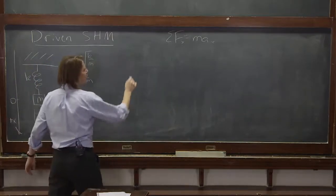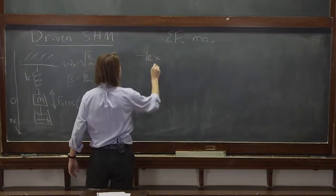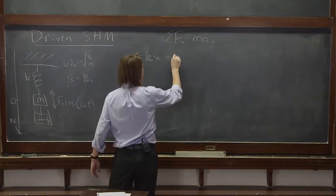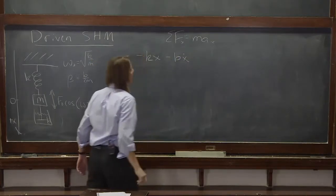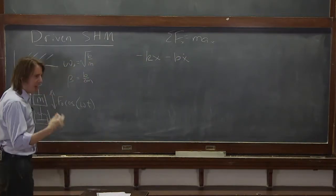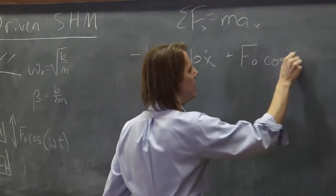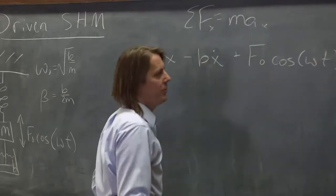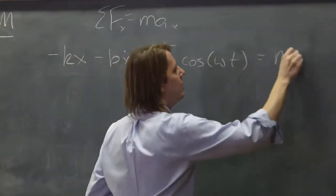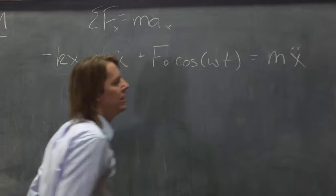So sum of the forces in the x. Minus kx, Hooke's law. Damping force minus bx dot. And now we simply add in f naught cosine omega t. That's what it is. Equals mx double dot.